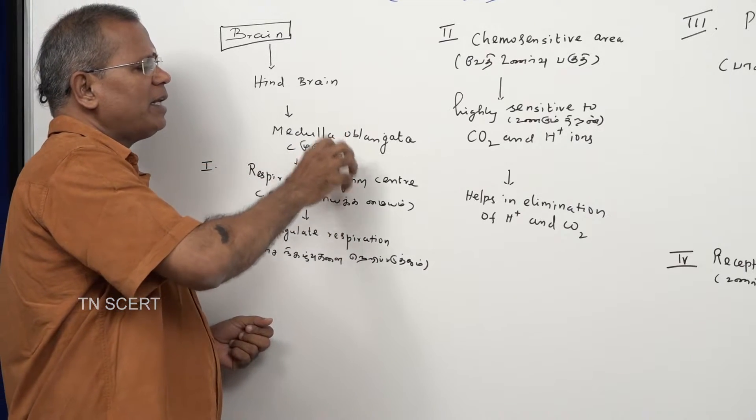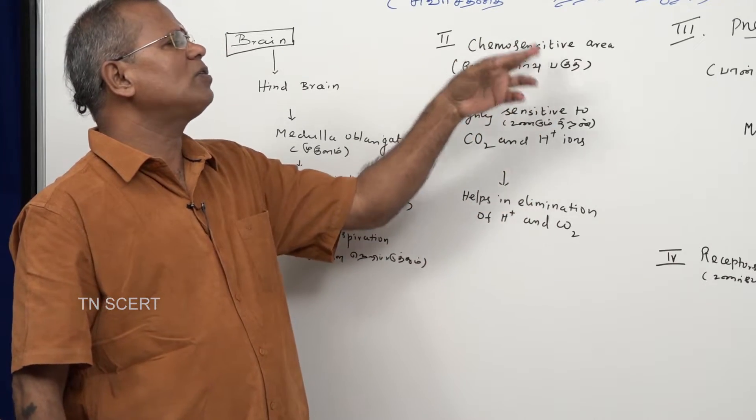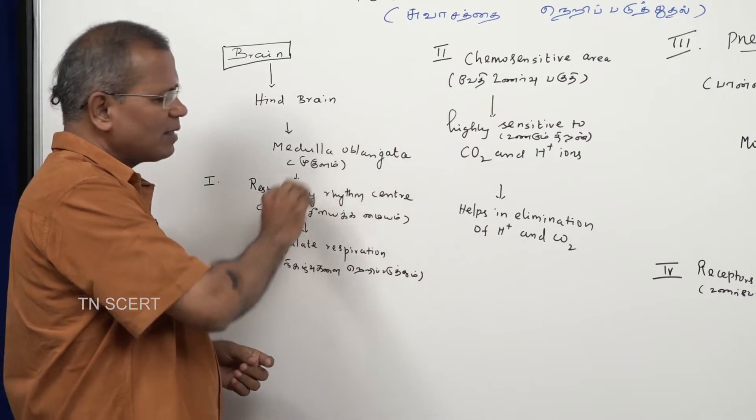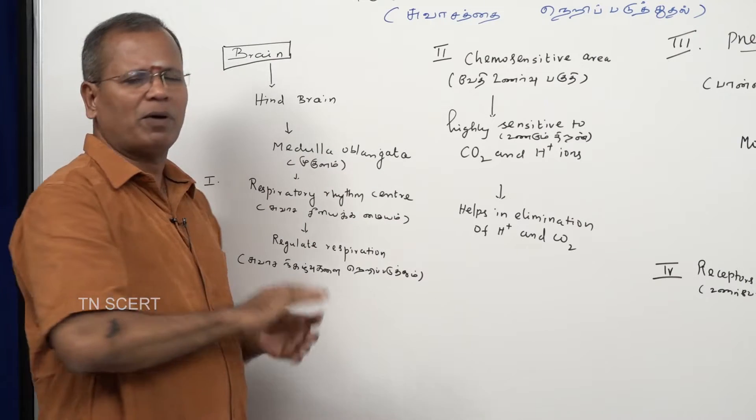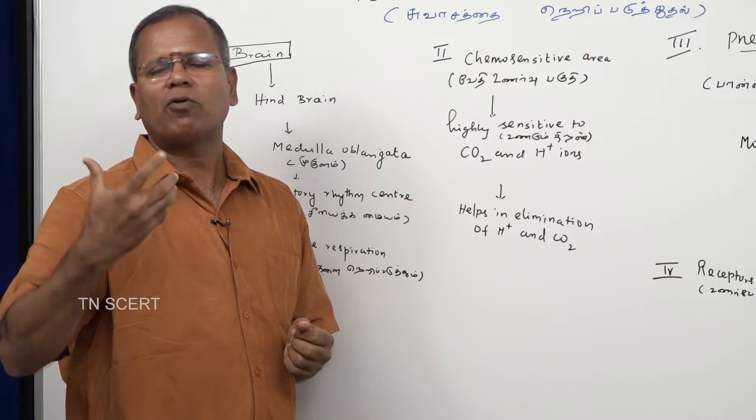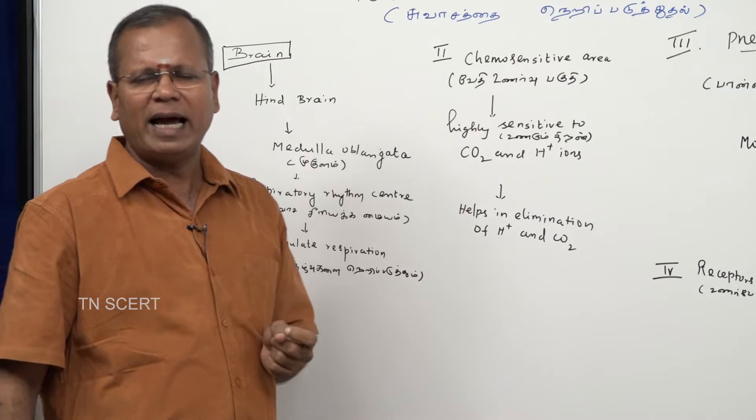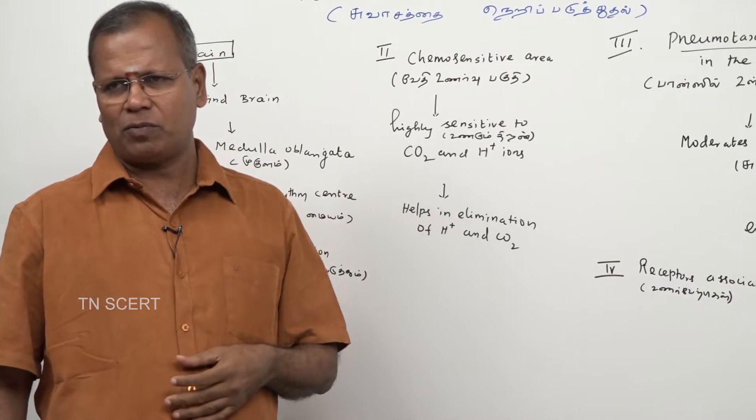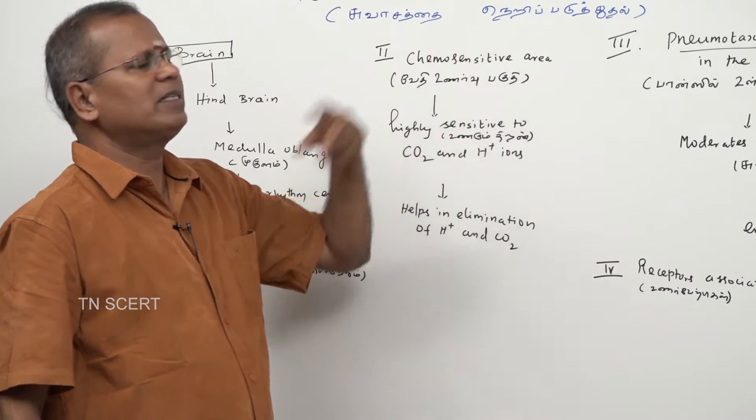Nearer to this respiratory rhythm center, in the medulla oblongata, there is a region set to be chemosensitive area. This area is highly sensitive to carbon dioxide and H plus ions.